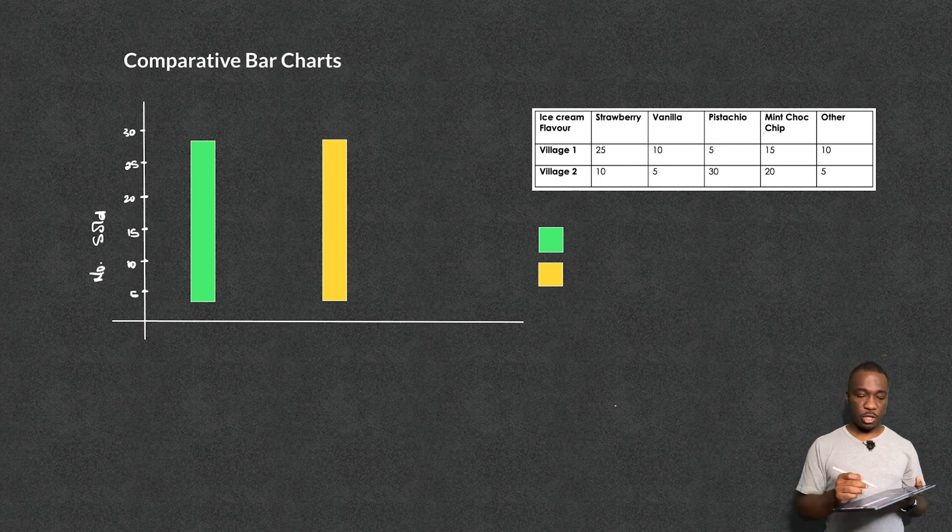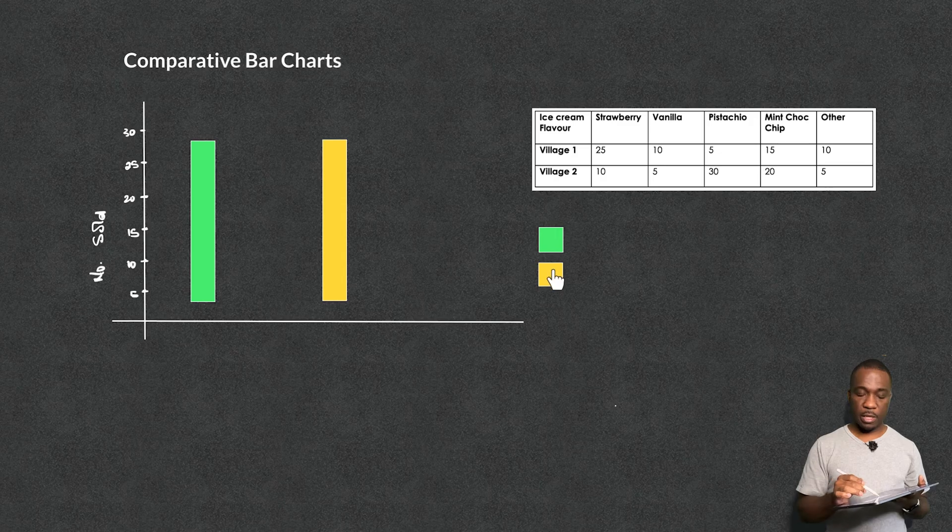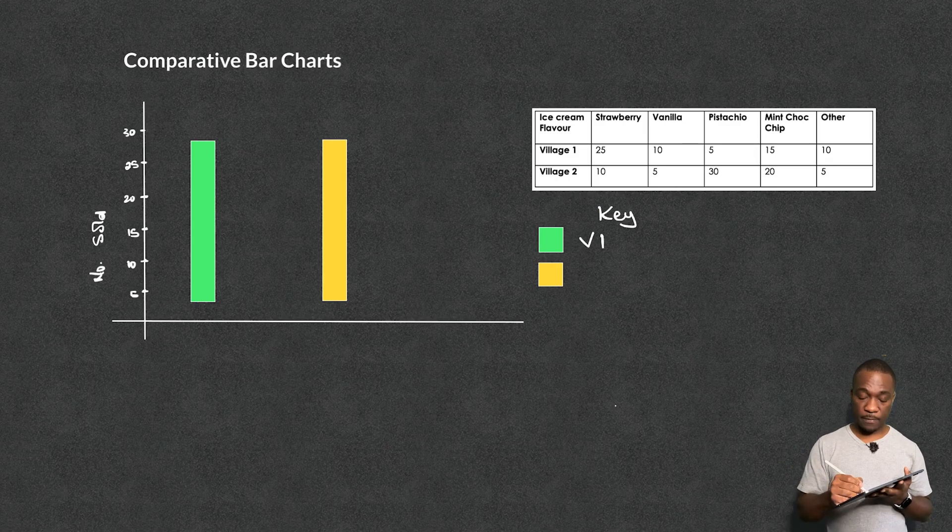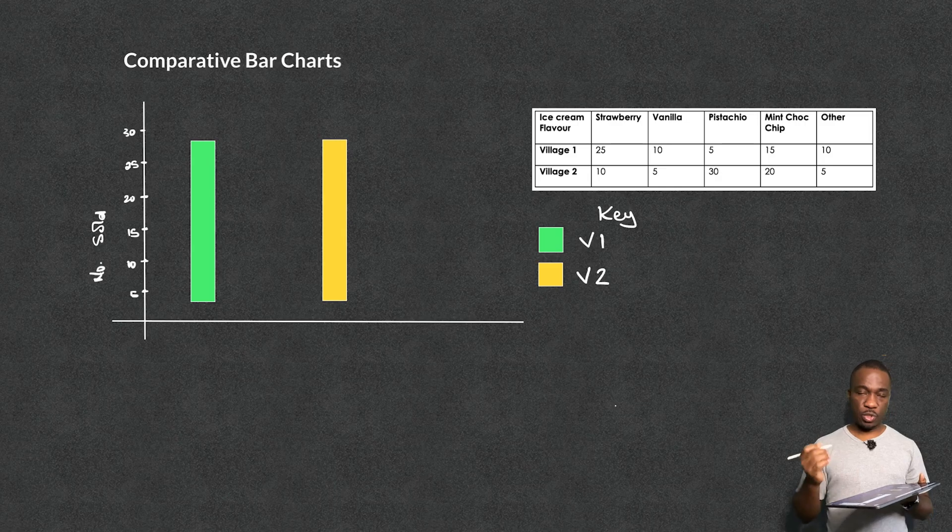Now with a comparative bar chart, because you're going to have different types of bars or different colors of bars, I need a key. So let's set out the key straight away. In my key, I'm going to say green is going to be for village one and the yellow is going to be for village two. And then now we're going to just do it one at a time. So we're going to plot village one.